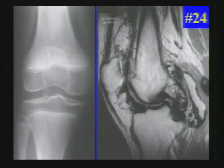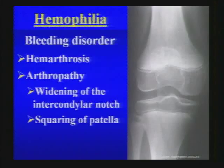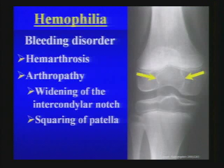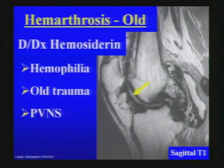Next — hemophilia, a bleeding disorder that may result in chronic recurrent hemarthroses with a subsequent arthropathy. It causes widening of the intercondylar notch and squaring of the patella. Hemosiderin on MRI causes low signal intensity on all pulse sequences with blooming on gradient echo images. The differential for hemosiderin in the joint includes not only hemophilia but also old trauma and PVNS.